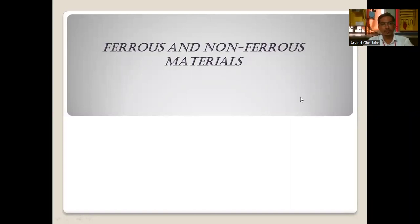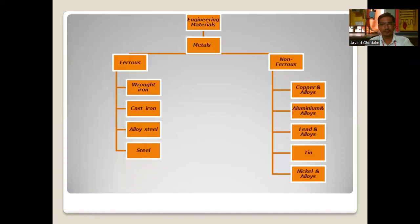Hello, today we will discuss the two basic types of materials, that is ferrous and non-ferrous materials. Engineering materials are basically divided into two categories: metals and non-metals. Within metals, there are two types: ferrous metals and non-ferrous metals.